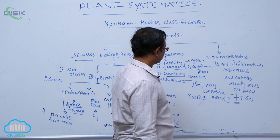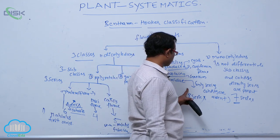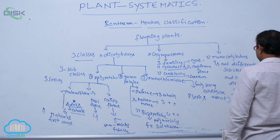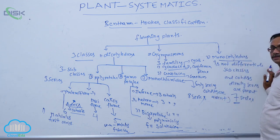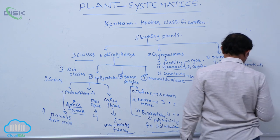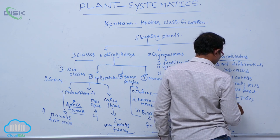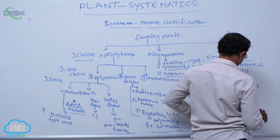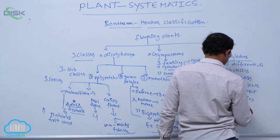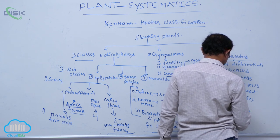In Monochlamidae, only a single perianth is present; series and cohorts are absent, and eight series are present. Monocotyledons — meaning single cotyledon — does not differentiate into subclasses and cohorts. Directly, seven series are present. One of these is the Coronarieae series, below which the family Liliaceae falls.